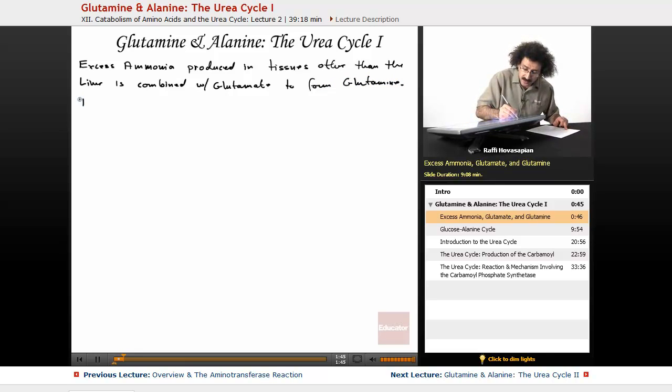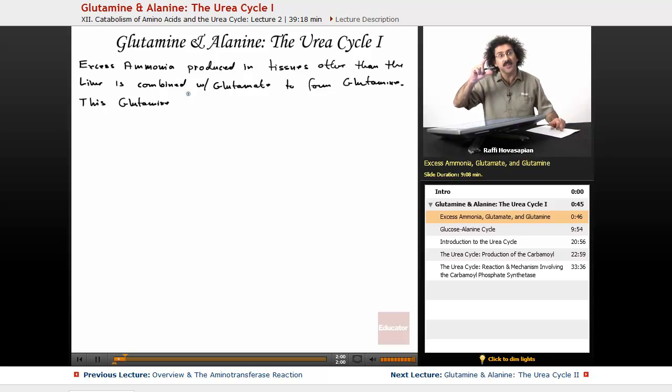Now this glutamine is transported to the liver. You remember from the overview in the last lesson, that was one of the sources of amino groups, the amino groups from outside of the liver that were brought into the liver via glutamine.